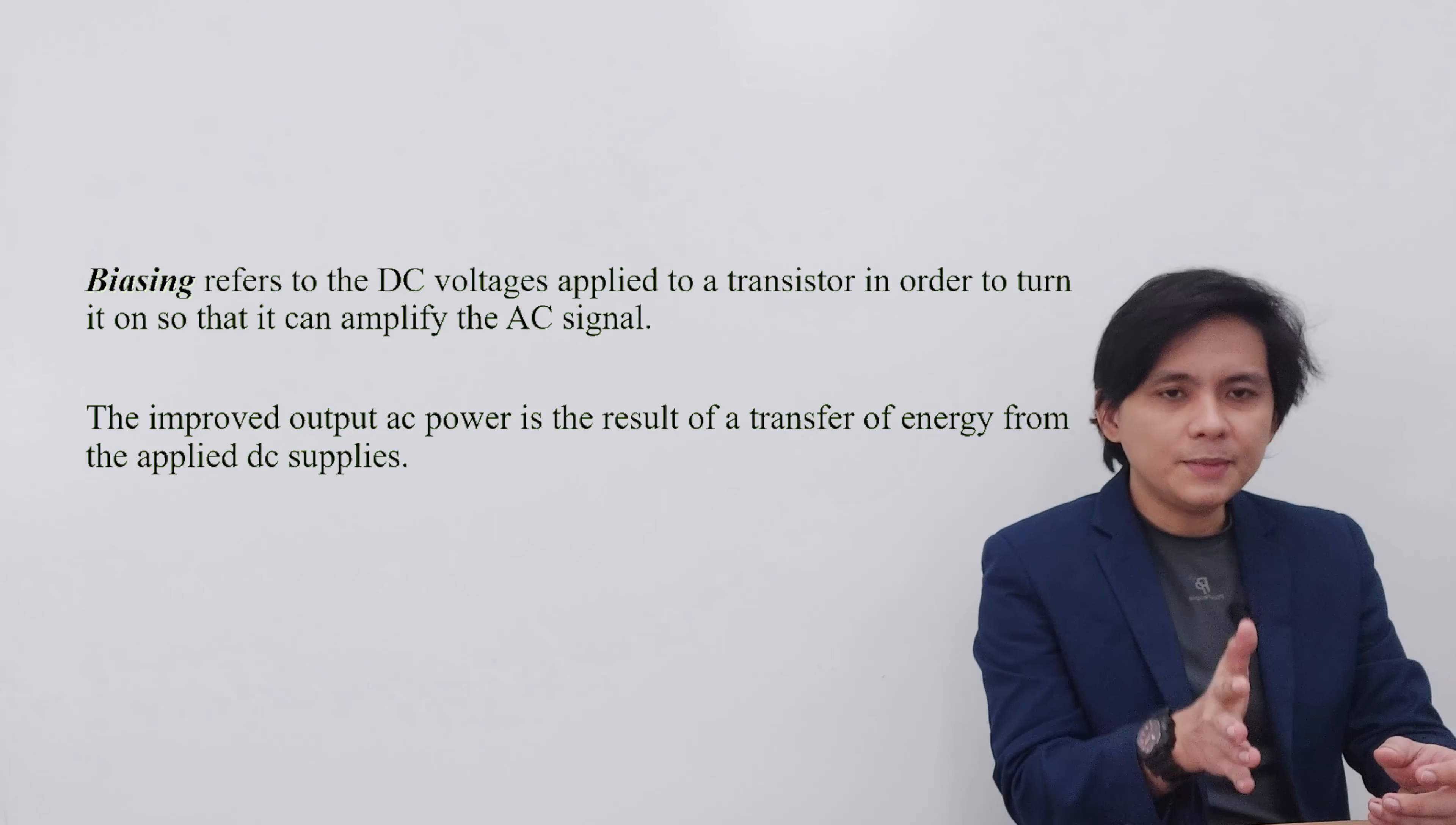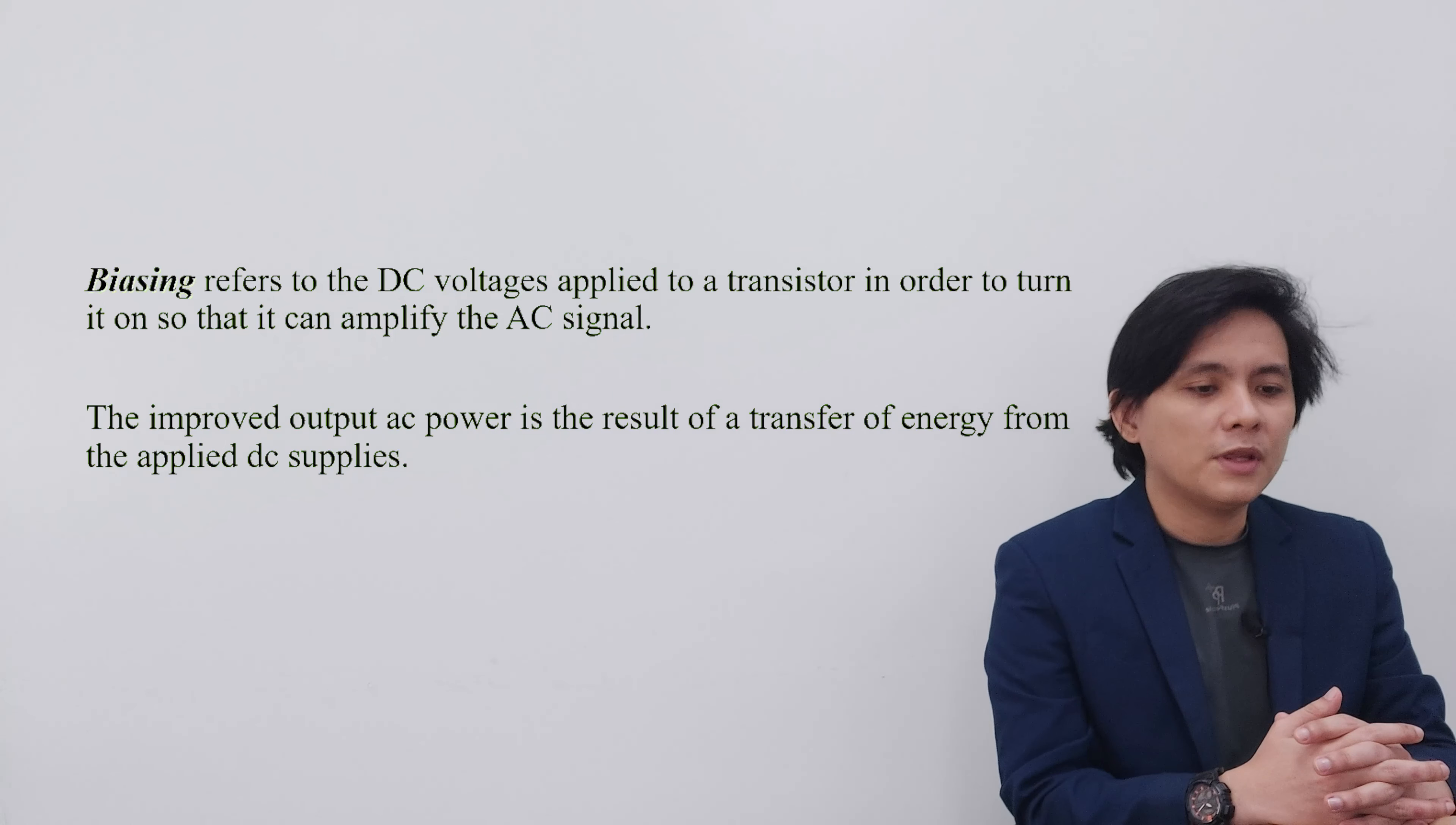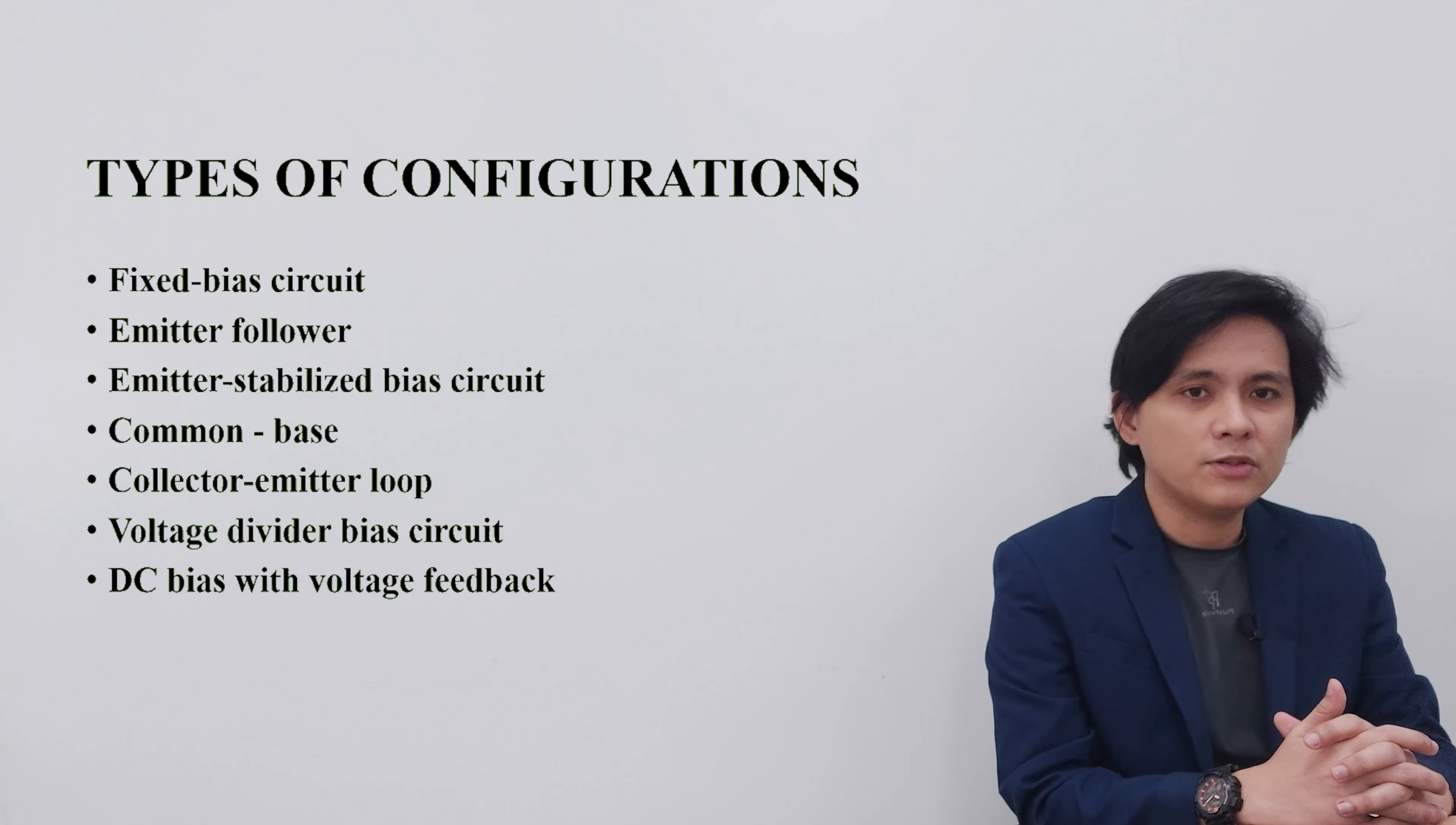The DC bias also improves the AC power in the output side of the amplifier because there is a transfer of energy from the applied DC supplies to the output of the circuits.